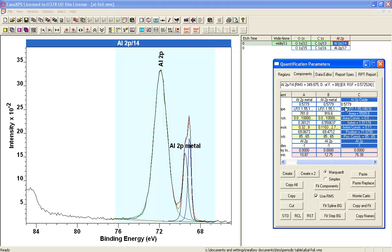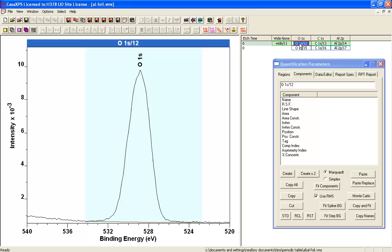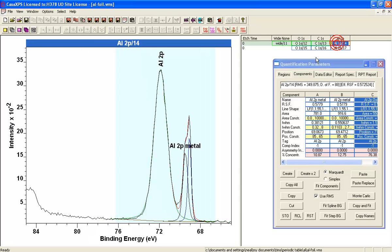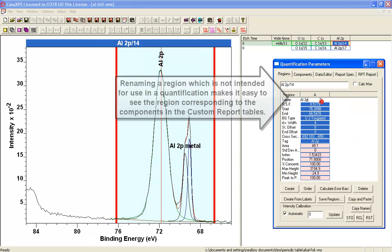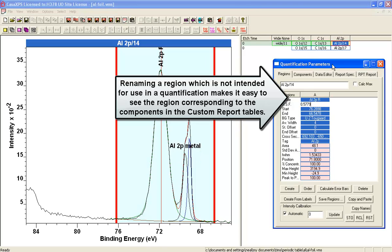So we can now differentiate between the different signals, so we could now compare the aluminum signal from the oxide against the region. I first of all need to make sure that I don't have the same name for the region and components, so if I select these two